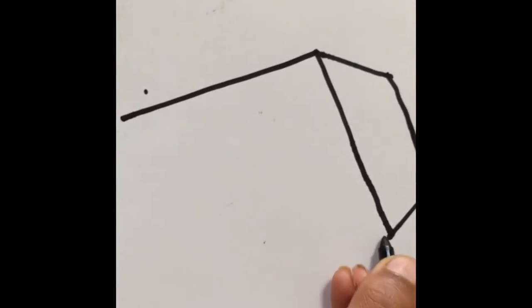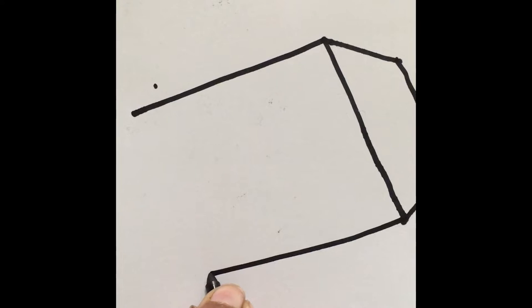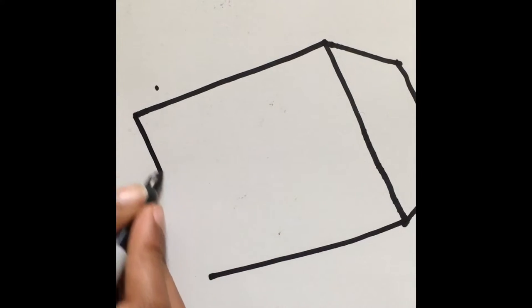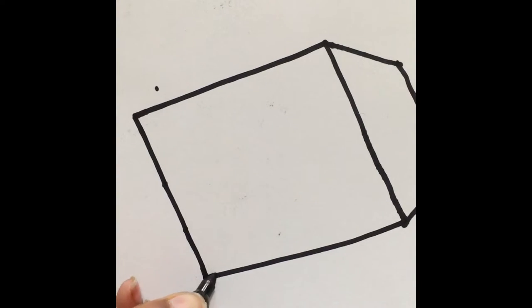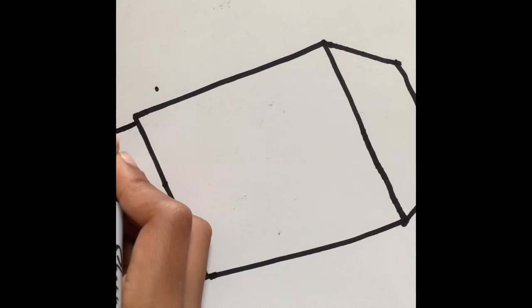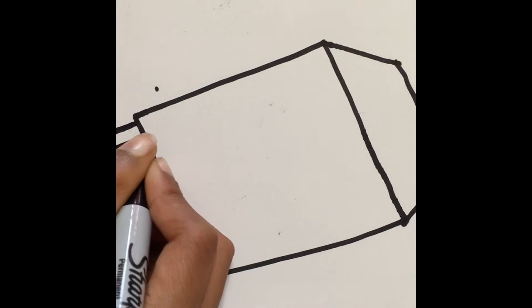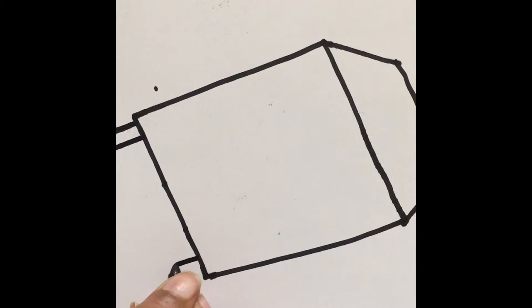So today we are going to draw a fire truck engine, a front view of a fire truck engine. First we are making a trapezoid for the top of the fire truck engine, underneath over that we draw a big square.